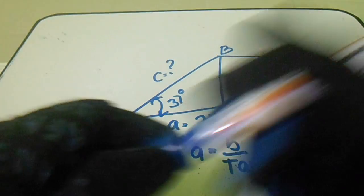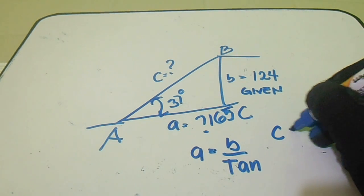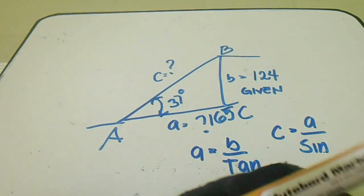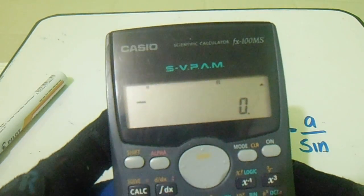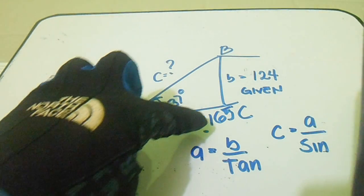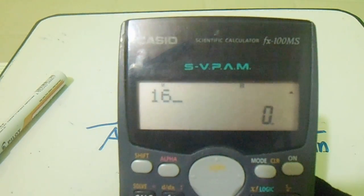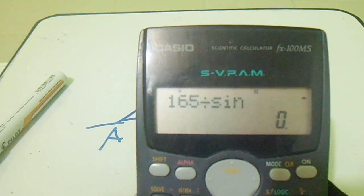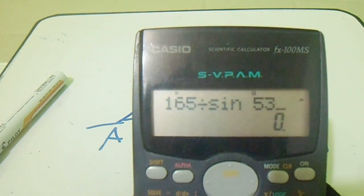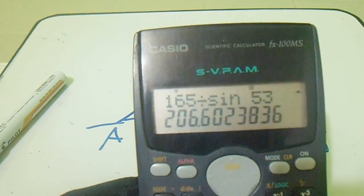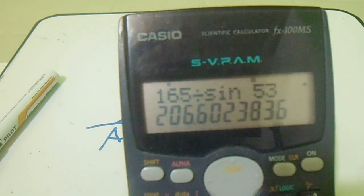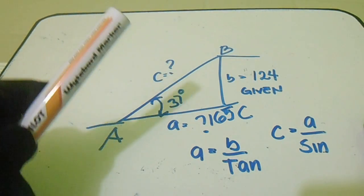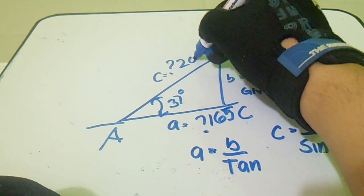Next, let's compute side C. The formula for C is C equals A over sin. So 165 divided by sin(53°) equals — our answer for C is 206.